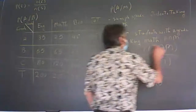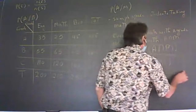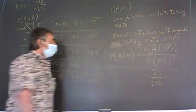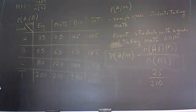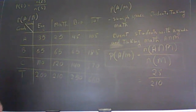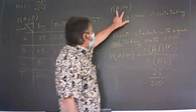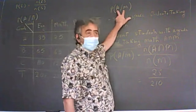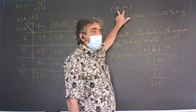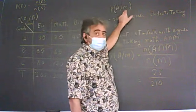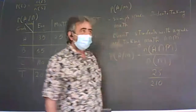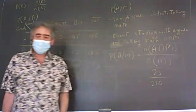In general, this is the formula for conditional probability. We take the intersection between the two events and divide it by the second event — the given condition.